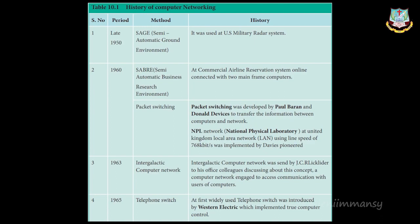In 1966, an experimental paper on wide area network was published by two persons: Thomas Merrill and Lawrence G. Roberts. The details about Lawrence Roberts are given in the 'Do You Know' section on page 134 — just read it.